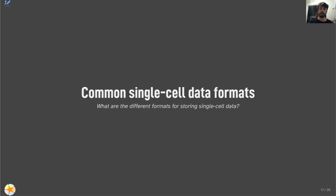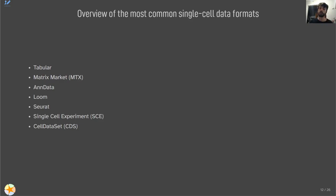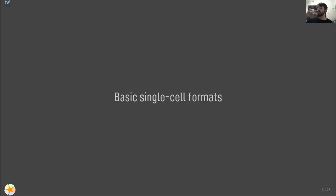Our next topic is: what are the common single cell data formats? There are a lot of different formats for storing single cell data. We have a big list and we're going to go through each one to understand what it is, what data it comprises, and why it's used. This is broken down into two main components: basic single cell formats and more complex ones.